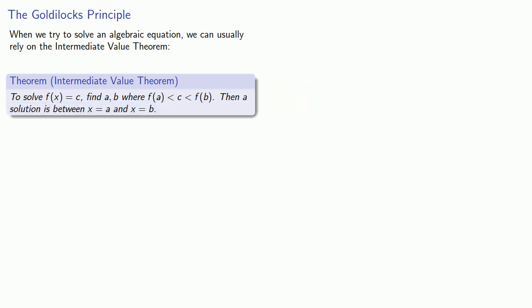There is some fine print here which we won't bother reading, but rather we'll go straight to an application. So to solve x squared equals 12, we know that 3 squared is 9, 4 squared is 16, and so a solution exists between x equals 3 and x equals 4.